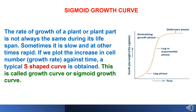First we would have an introduction about sigmoid growth curve. The rate of growth of a plant depends upon various factors and it is not always the same. Sometimes the growth rate is very slow and sometimes there is rapid nature. If we plot the increase in cell numbers regarding growth rate against time, a typical S-shaped curve is obtained. This is called the growth curve or sigmoid growth curve.